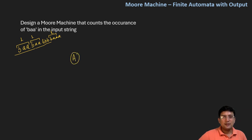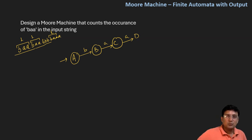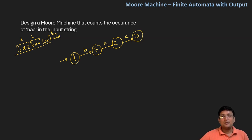Let's say A is the initial state. If I get a B, I move to state B. If I get a small 'a', I move to state C. And if I get another 'a', I move to state D. I'll consider D as the final state, although I'm not drawing it as a final state because I will convert this automata into a Moore machine, and in the Moore machine there are no final states.